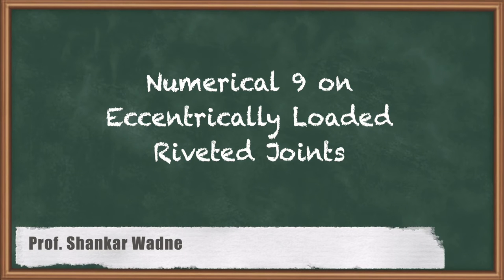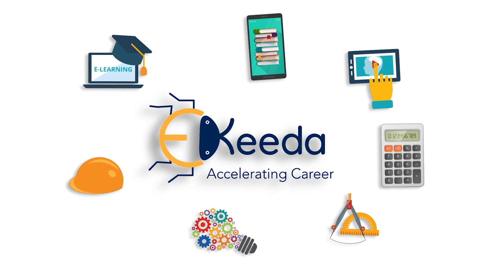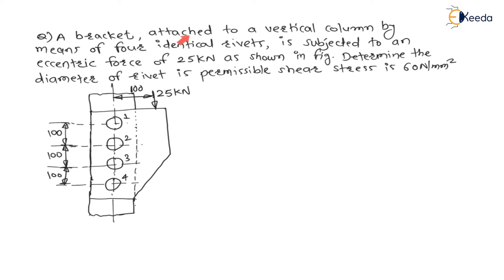Hello my dear students. In this lecture we are going to see one numerical on eccentrically loaded riveted joint. The question is: a bracket attached to a vertical column by means of 4 identical rivets — meaning all rivets have the same diameter — is subjected to an eccentric force of 25 kN as shown in figure. The 4 identical rivets are subjected to the eccentric force of 25 kN at a distance of 100 mm, so eccentricity is 100 mm. Determine the diameter of the rivet if permissible shear stress is 60 N/mm².